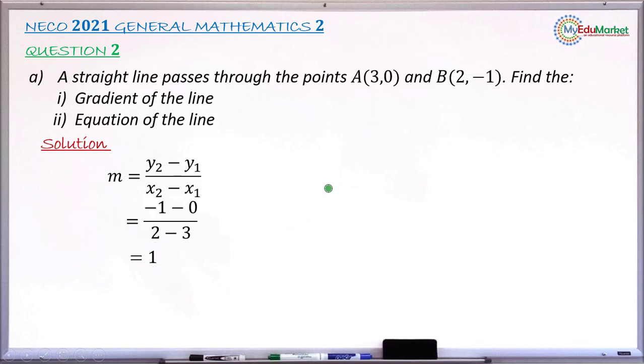That formula says y minus y1 equals M times x minus x1, where M refers to the slope of the line and x1, y1 simply refers to the coordinate of any point on the line. In this case, I'm going to use point A with coordinate x1, y1. So I'm going to substitute M by 1, x1 by 3, and y1 by 0.